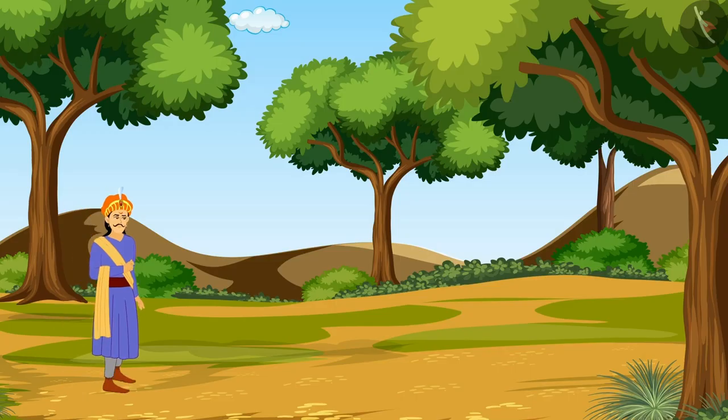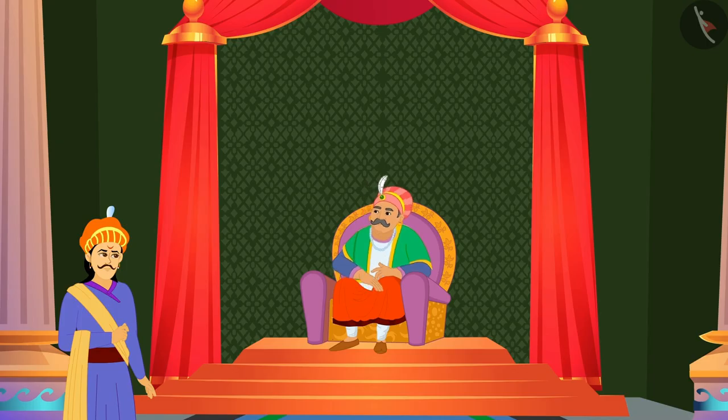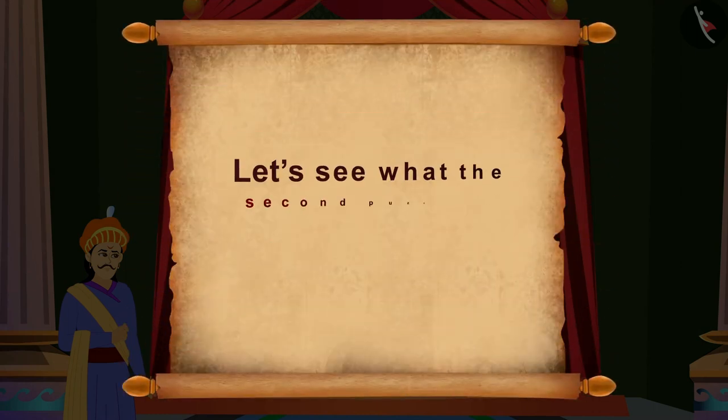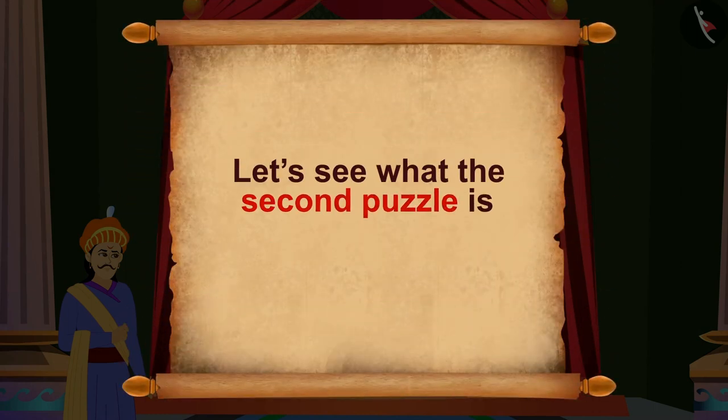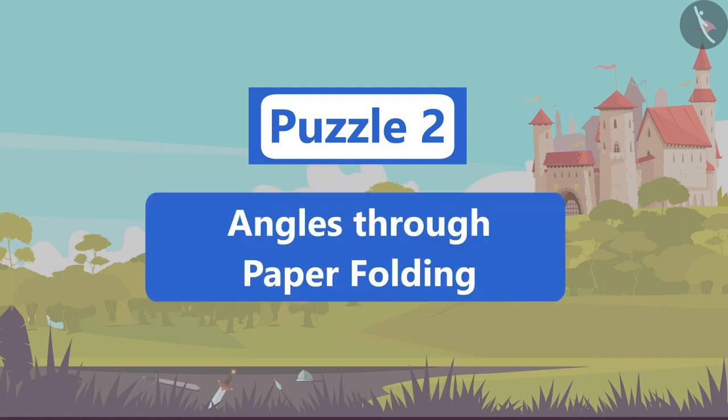Next day, Birbal went to Akbar's palace and was ready to answer Akbar's next puzzle. Let's see what the second puzzle is. Puzzle 2: Angles through paper folding.